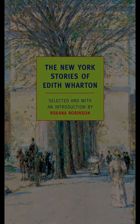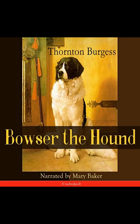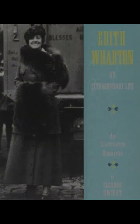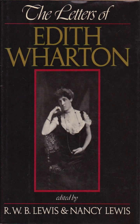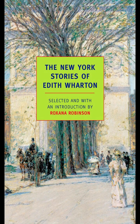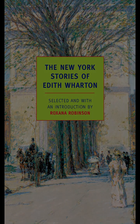These characters, while secondary to Bowser and Old Man Coyote, each have their own personalities and quirks, making the forest a lively and vibrant place. The moral lessons in Bowser the Hound are subtly woven into the fabric of the story. Burgess does not preach to his readers but instead allows the actions and experiences of his characters to convey important messages. The themes of friendship and community are particularly prominent. Bowser's friends in the green forest often come to his aid, demonstrating the value of mutual support and cooperation. This sense of community is contrasted with the solitary nature of Old Man Coyote, suggesting that while independence and cunning have their place, the strength of a supportive community is invaluable.